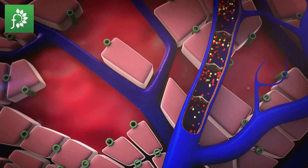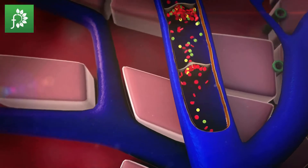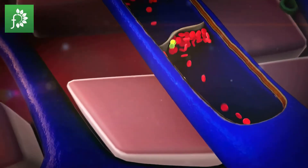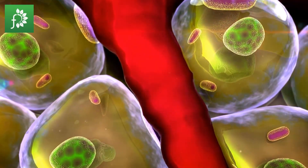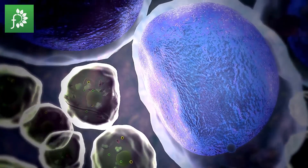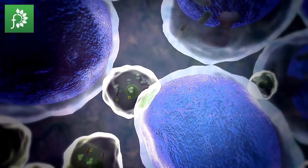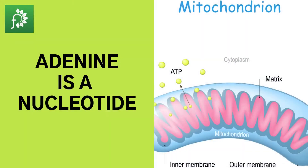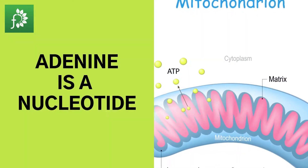This continuous pumping creates a proton gradient, where the positively charged protons are attracted to the more negative matrix. When the protons re-enter the matrix through the ATP synthase protein complex, they catalyze the production of ATP.